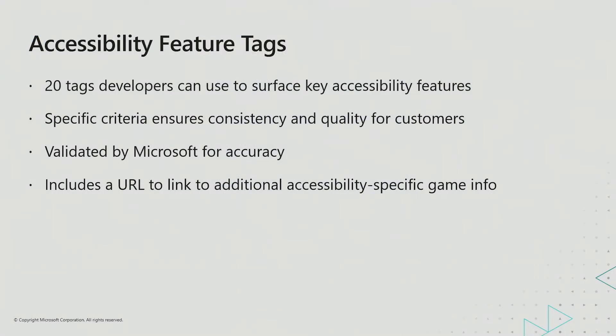Accessibility Feature Tags are one of our newest resources. Since November of 2021, Xbox developers and publishers have been given the ability to surface common accessibility features in their games by using a new accessibility section in the Microsoft Partner Center Gaming Metadata Module. The purpose of this functionality is to provide additional ways for game developers to surface content that was designed with accessibility in mind to gamers with disabilities. Based on in-depth research with the gaming and disability community and game developers, 20 features can be tagged so long as specific criteria for each tag is met. This criteria is designed to ensure the features implemented are both high quality and consistent, so gamers can rely on them when making decisions whether or not to purchase content.